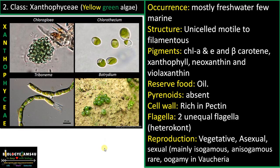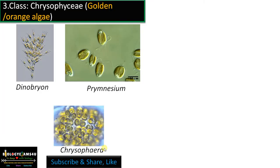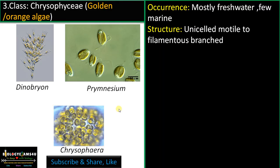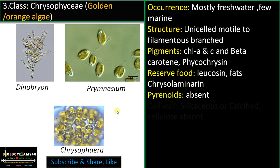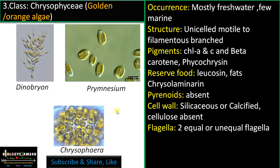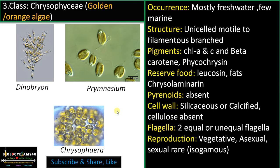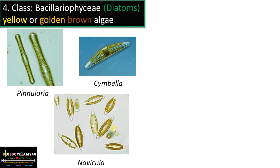Class 3 is Chrysophyceae, the golden orange algae. They are mostly freshwater, rarely marine. Structure ranges from unicelled motile to filamentous branched forms — Dinobryon has a tree-like appearance under the microscope. Pigments include chlorophyll A and C, beta-carotene, and phycochrysine, a characteristic pigment of this class. Reserve food is leucosine, fats, and chrysolaminarin. Pyrenoids are absent. Cell wall is silicateous or calcified; cellulose is absent. Flagella are two equal or unequal (isocont or heterocont). Sexual reproduction is rare, sometimes isogamous. Examples include Dinobryon and Prymnesium.